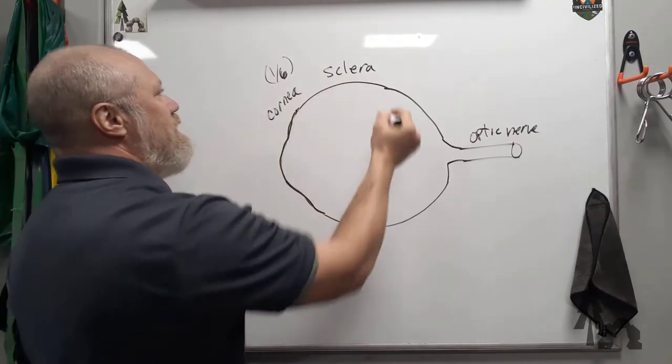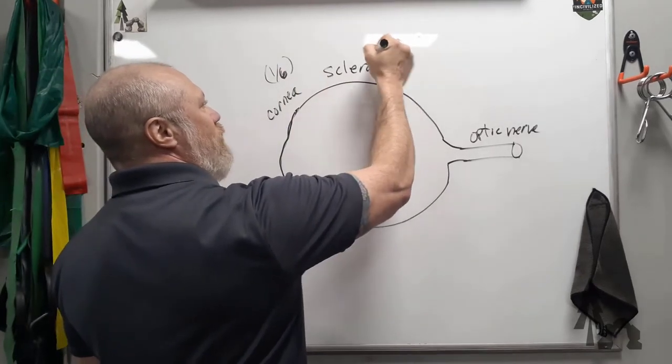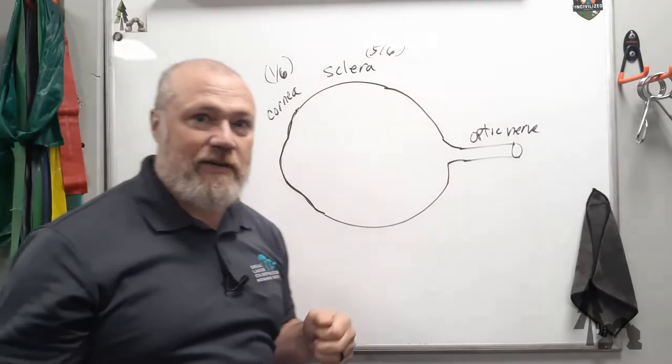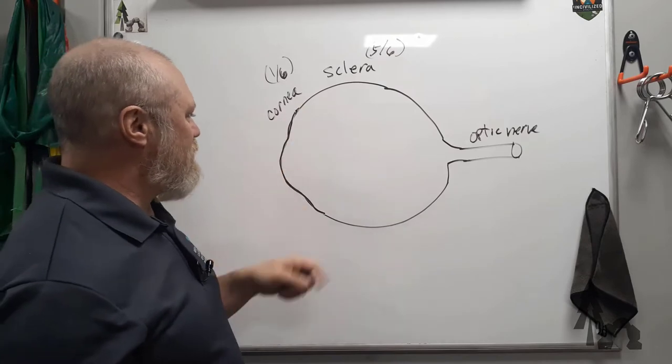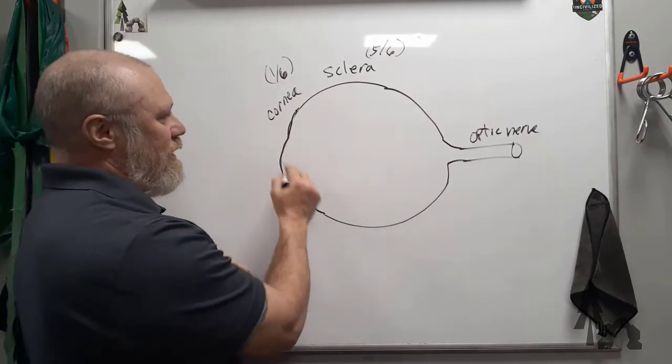And about five-sixths is the white connective tissue, the sclera. So that's why your eyeball is white. And the cornea is the transparent part in the front that's got this little dimple right here.